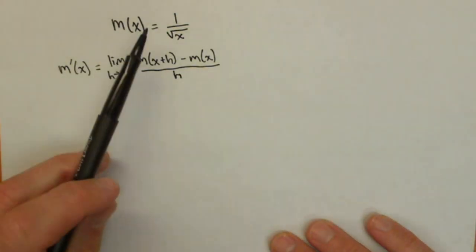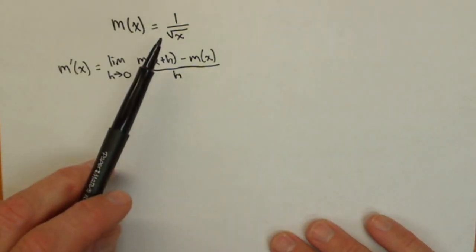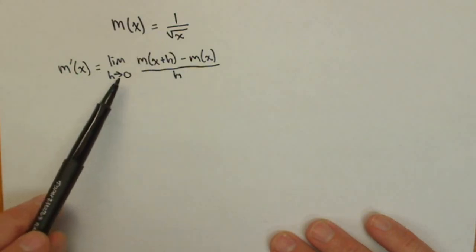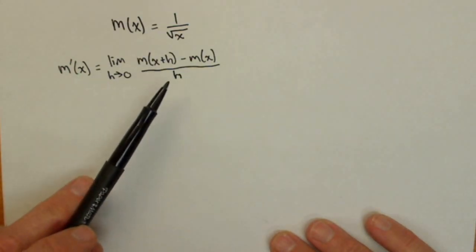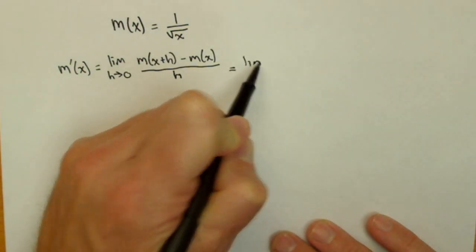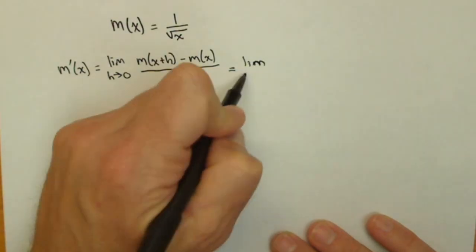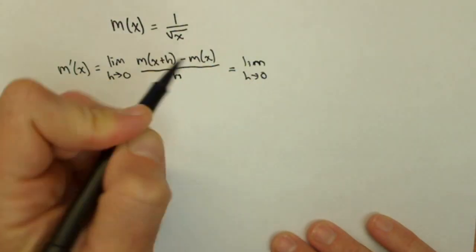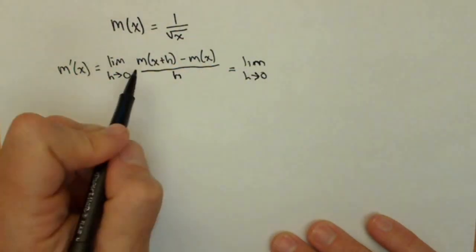In this video, we're going to take the derivative of 1 over square root of x using the definition of the derivative, which is limit as h goes to 0 of m of x plus h minus m of x all over h. And our first step is to rewrite this using this definition. And then we'll see what kind of algebra we can use to help ourselves out.